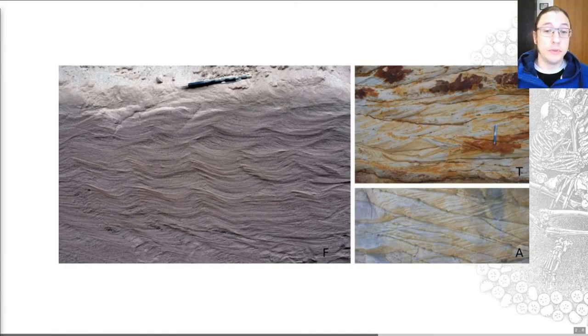Mudstones, for example, are notorious for providing little environmental information. They're often deep marine, but they can also be overbank or delta deposits. The fossils will help you say which one of those environmental conditions the rock was deposited in, if there are fossils in that rock.